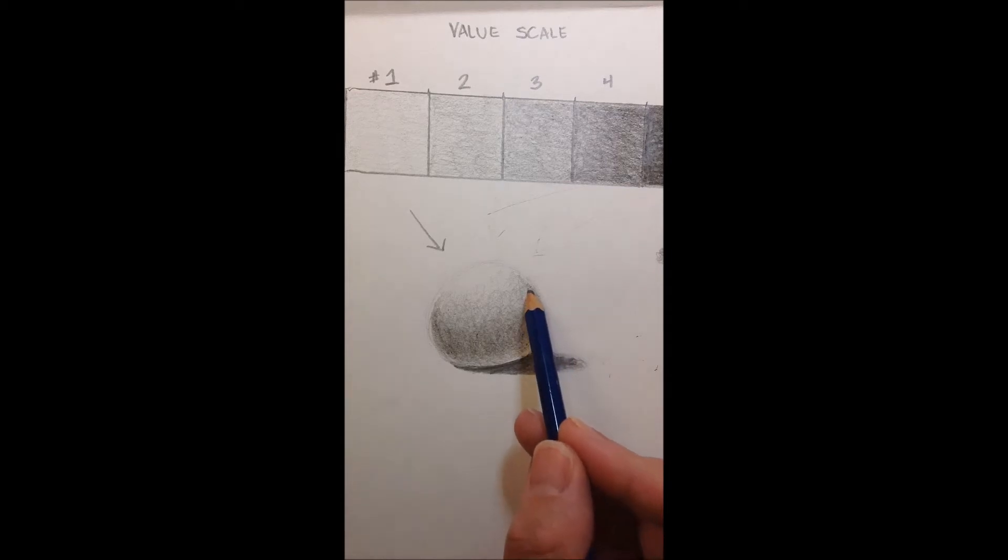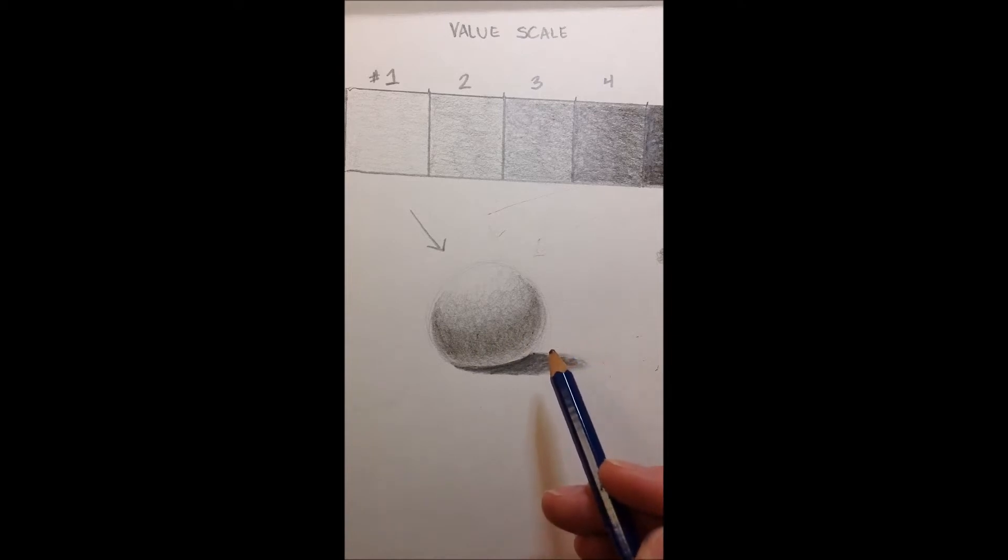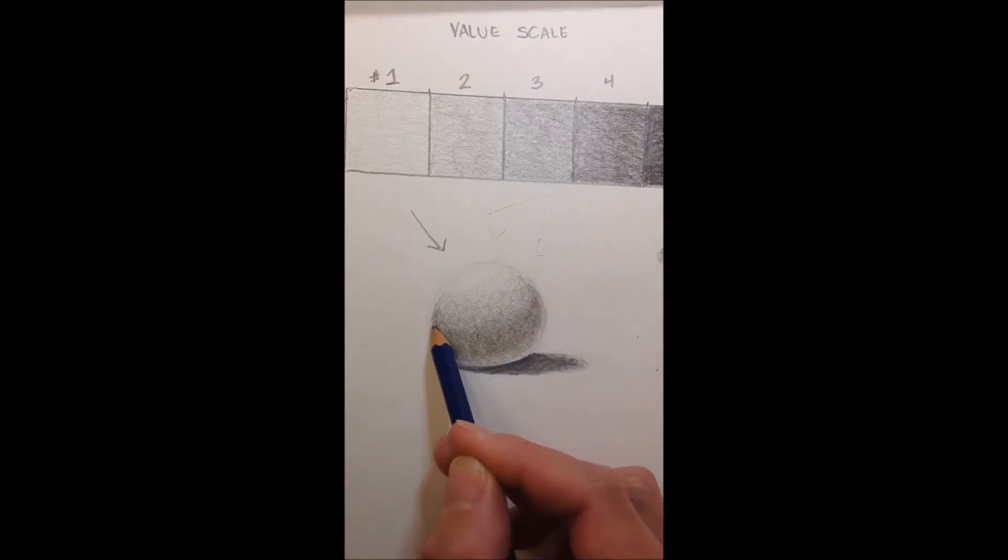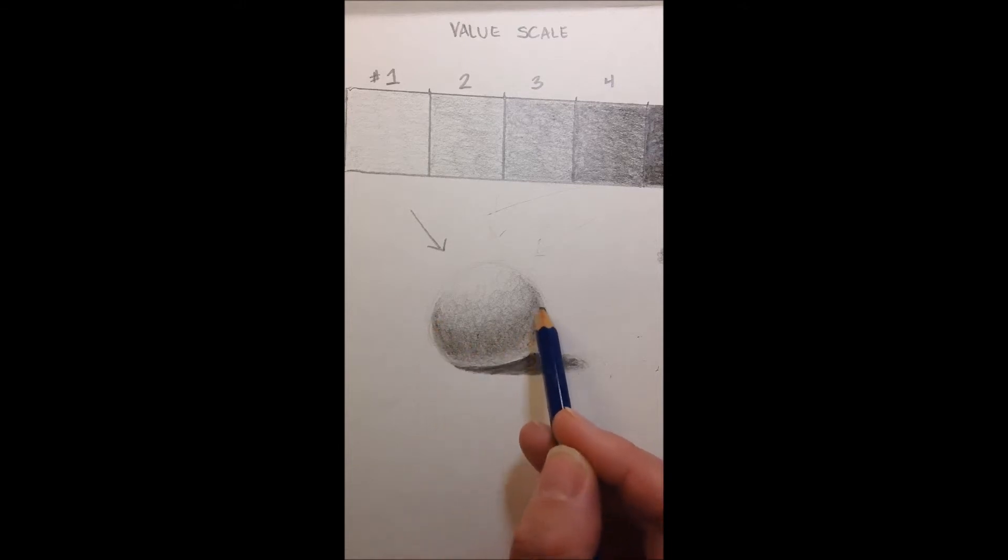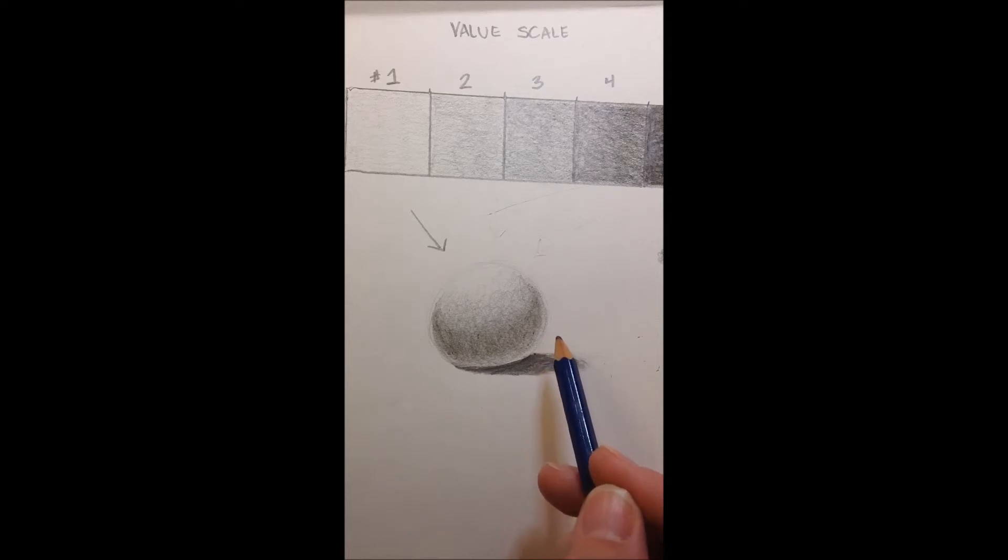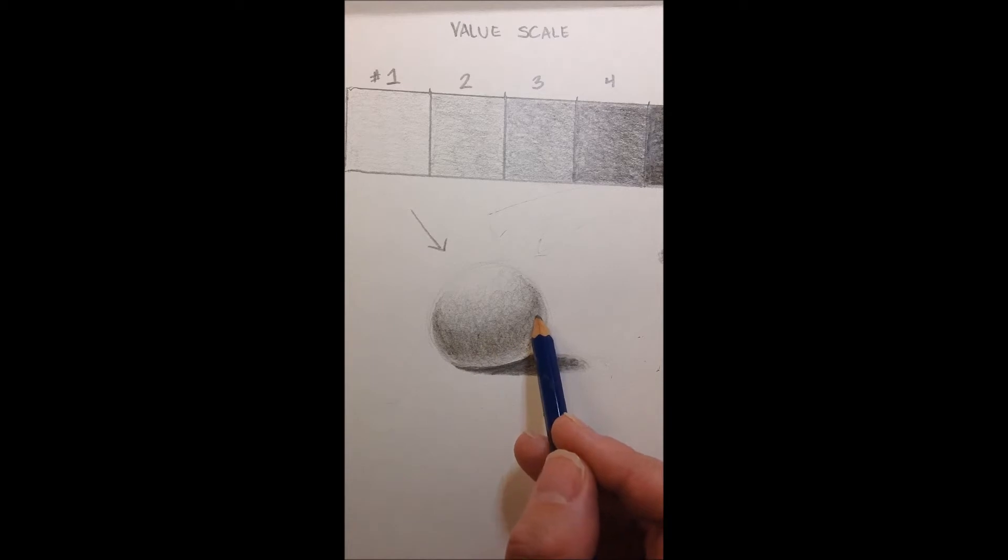The next thing is that the core shadow that goes across here, it's almost in the shape of like a smiley face. It curves around and goes up on the sides, like the Cheshire Cat in Alice in Wonderland, that smile that stays as he disappears. That's kind of the shape that we're going for.